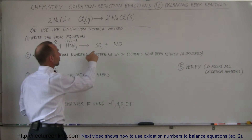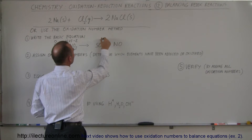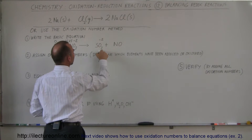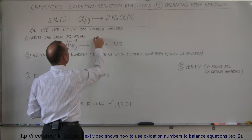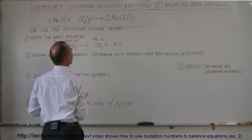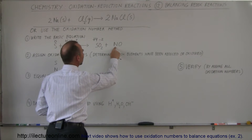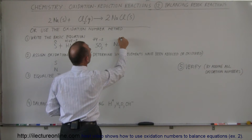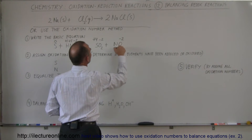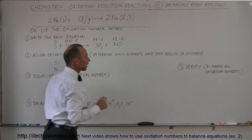Here we have sulfur dioxide. Since oxygen is typically minus two and there are two oxygen atoms, the sulfur here will be plus four. And here we have nitric oxide — oxygen is typically minus two, which means the nitrogen here will have to be plus two.